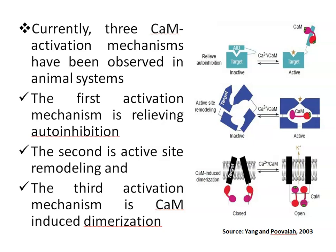The first activation mechanism is relieving auto-inhibition. In this mechanism, Calmodulin binds to a target site and induces a conformational rearrangement. In the inactive state, the active site is occupied by the AID domain — the auto-inhibitory domain.